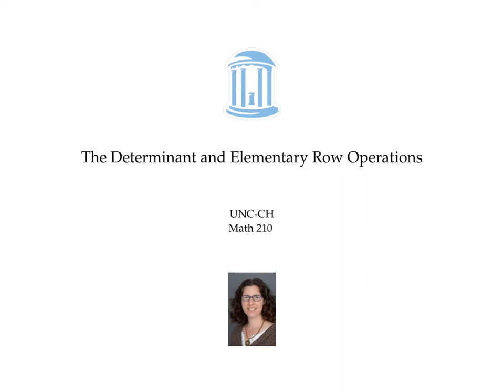It turns out that when two matrices are related by elementary row operations, like switching two rows or multiplying a row by a constant, then their determinants are also related. This video lays out those relationships.